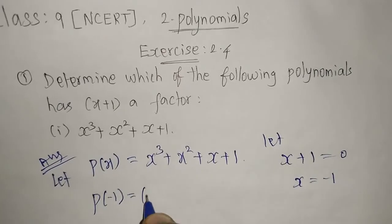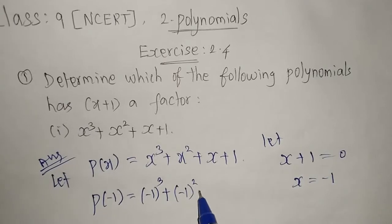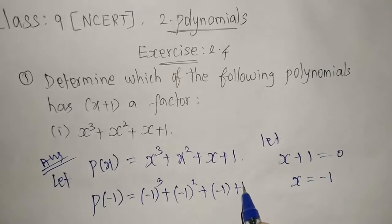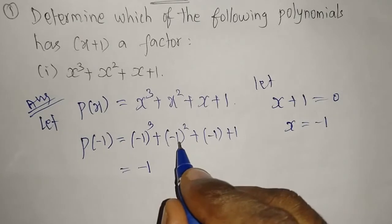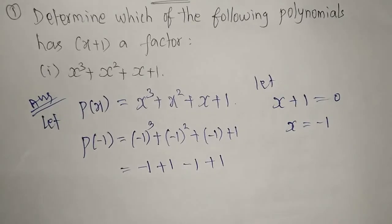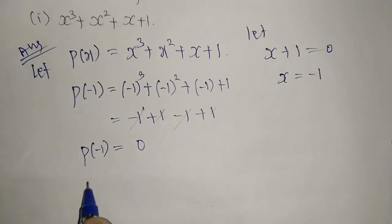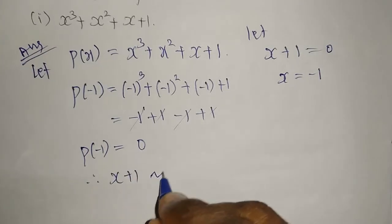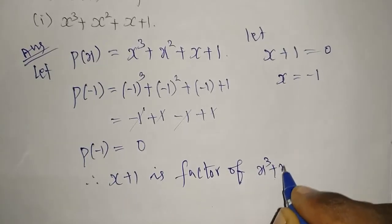So p(-1) = (-1)³ + (-1)² + (-1) + 1. Now (-1)³ = -1, (-1)² = +1, then we have -1 + 1. The +1 and -1 cancel, and likewise the other -1 and +1 cancel, giving us 0. Since p(-1) = 0, therefore (x+1) is a factor of the polynomial x³ + x² + x + 1.